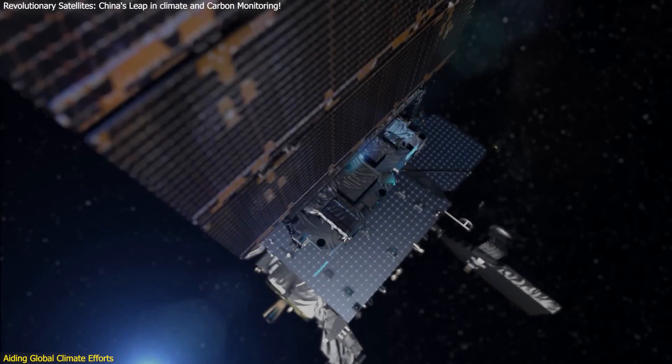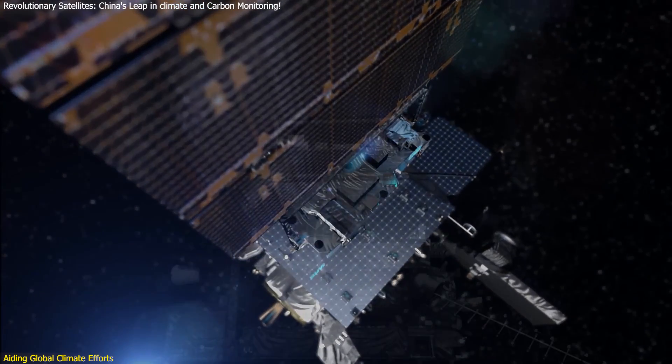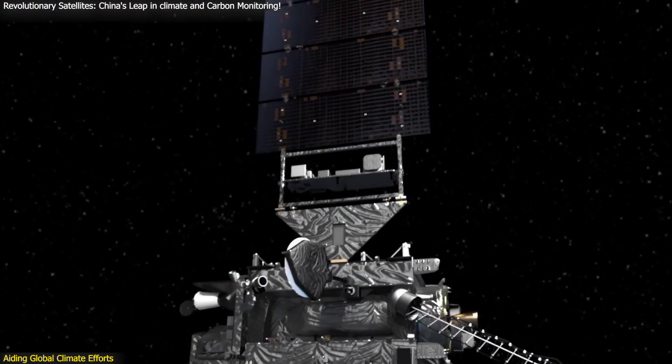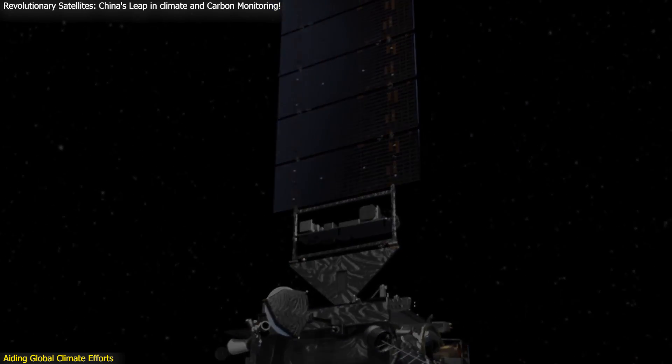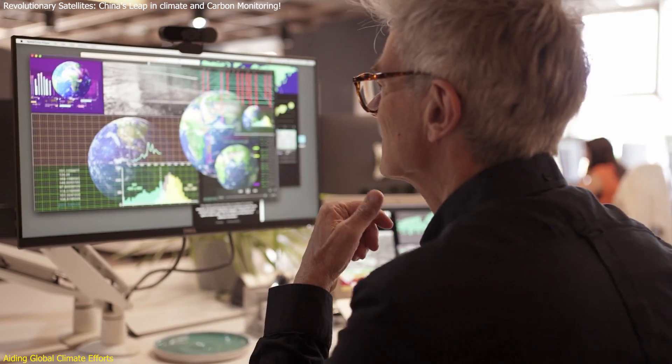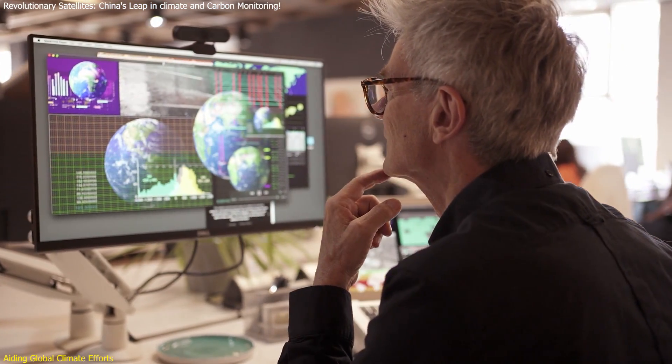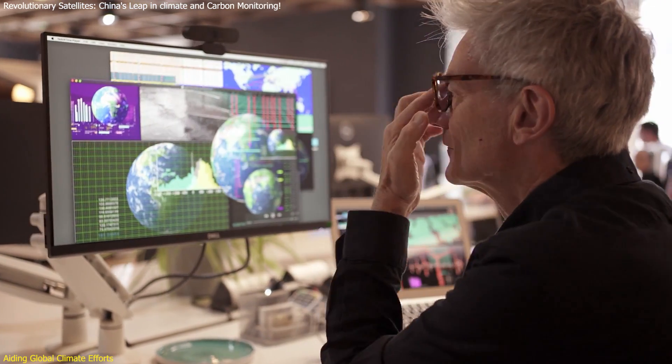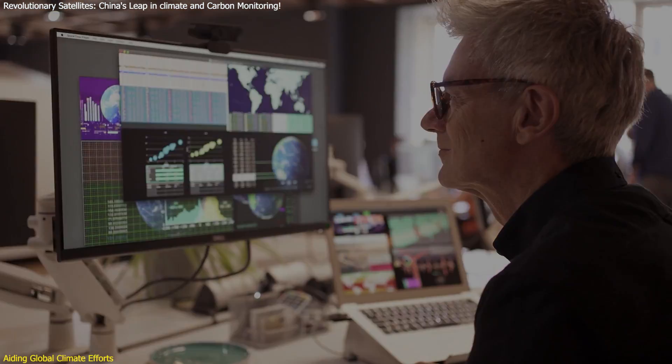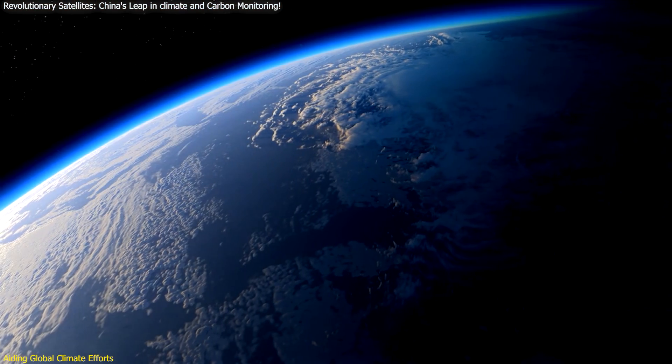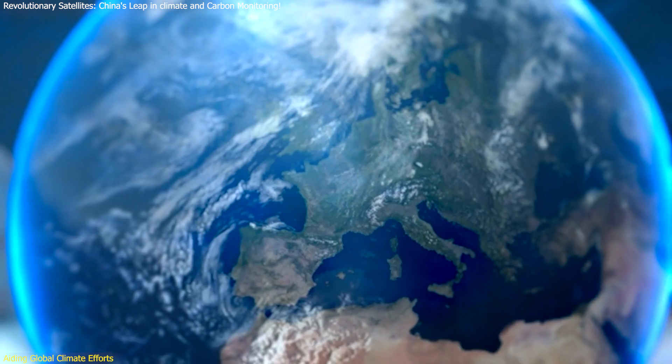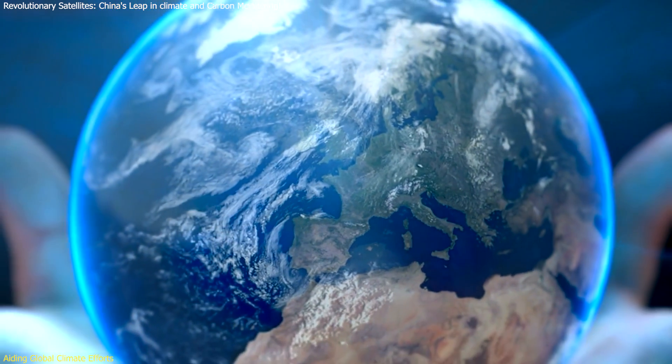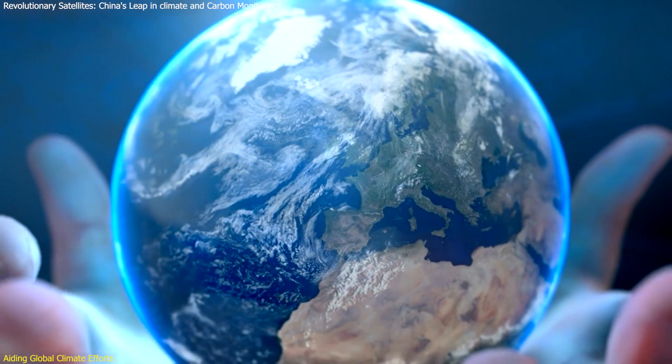The satellites enhance global capabilities in climate monitoring. The CNSA plans to promote the sharing and utilization of satellite data resources internationally. By making this data available to scientists and policymakers worldwide, China is contributing to a global understanding of climate change. This collaborative approach ensures that countries can work together to develop and implement effective climate solutions. These efforts highlight the importance of international cooperation in addressing climate change and protecting our planet.